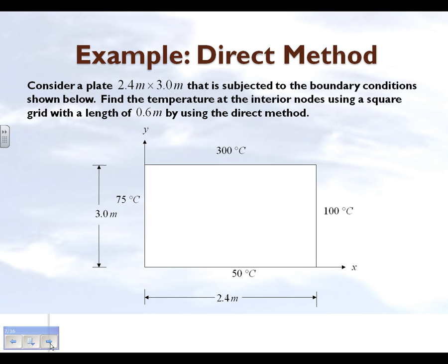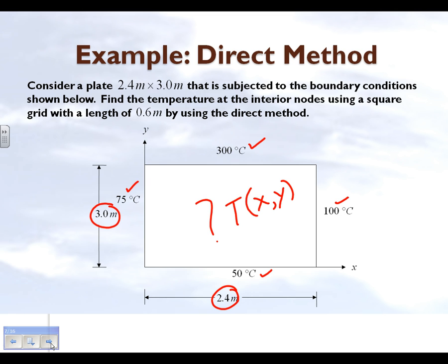Let's take an example to see how the direct method works. Consider a plate which is 2.4 meters long and 3.0 meters wide. We are maintaining the four edges at four different temperatures: 50 degrees Celsius, 100 degrees Celsius, 300 degrees Celsius, and 75 degrees Celsius. What we want to do is find the steady-state temperature as a function of x and y.